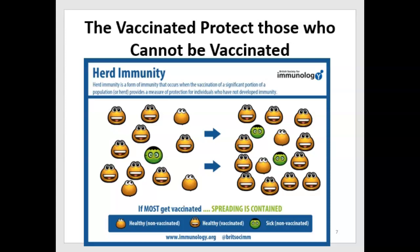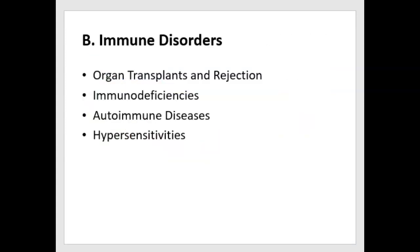That's a bit about applied immunology and how it relates to our current situation with COVID. Now let's look at some immune disorders. I'll briefly talk about organ transplants and rejection — the means by which transplanted organs can be rejected by a person's immune system.